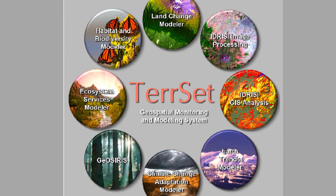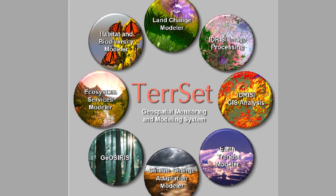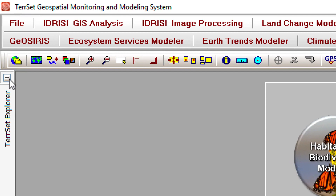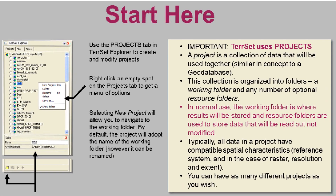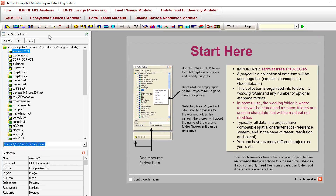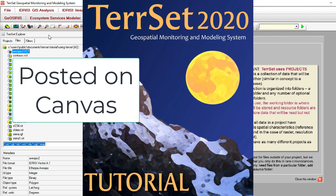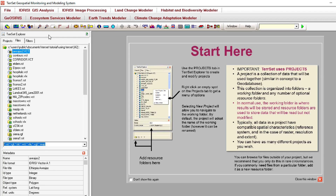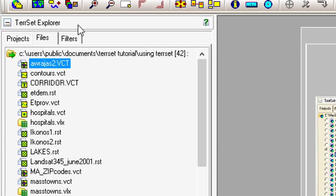So the first thing you do to get started in TerrSet is set up your project workspace. You can either expand the plus sign in TerrSet Explorer or click the first icon for TerrSet Explorer, which opens up this side pane. On the home page there's a 'Start Here' section with a whole set of instructions and tutorial information on how to get started working with your files and workspace. There's also a manual I've posted with full documentation.